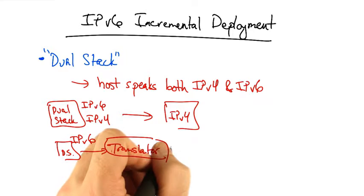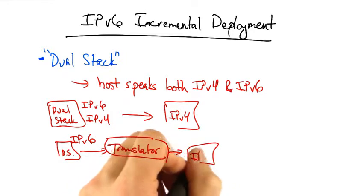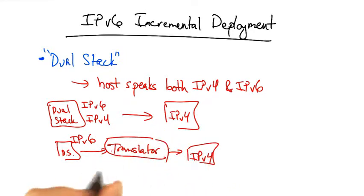or it must rely on a translator, which knows how to take a v4 compatible IPv6 address and translate it to the v4 address.